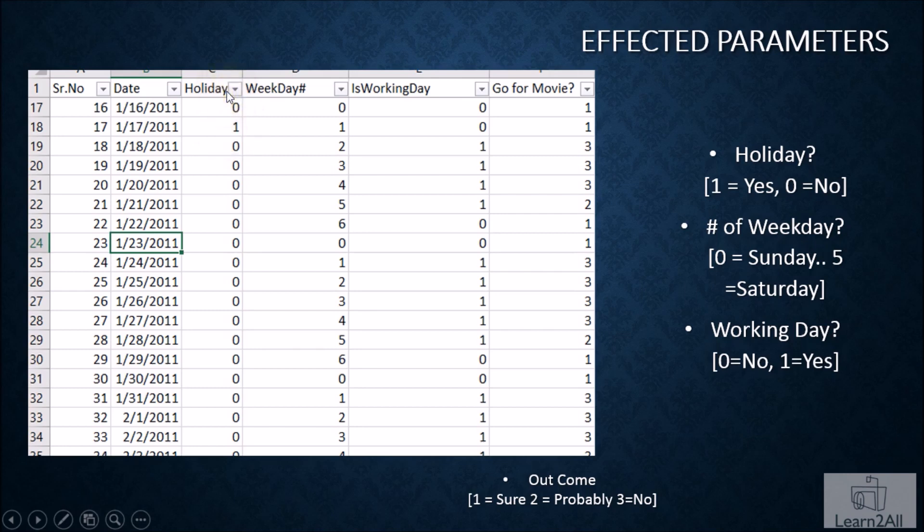They have also taken one column holiday, whether on this particular day there is a public holiday or not. One means yes, there is a public holiday and zero means there is no public holiday. They are also capturing the weekday. Zero means Sunday, one means Monday and six means Saturday.